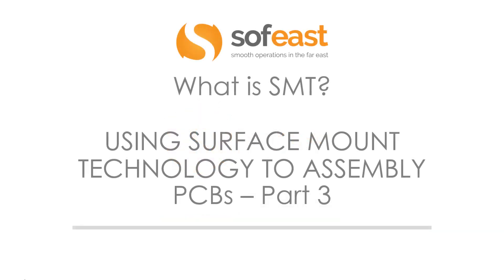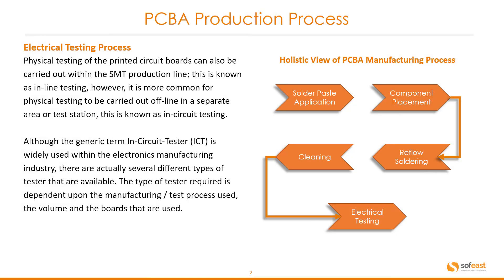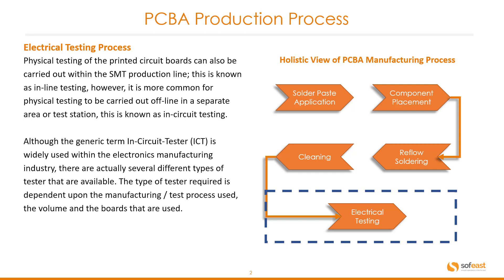Welcome to this video. This is part three of using surface mount technology to assemble PCBs, covering the electrical testing process — the last section of the process. Physical testing of printed circuit boards can be carried out within the SMT production line, known as inline testing. However, it is more common for physical testing to be carried out offline in a separate area or test station, known as in-circuit testing, or ICT — a term widely used within the electronics manufacturing industry.